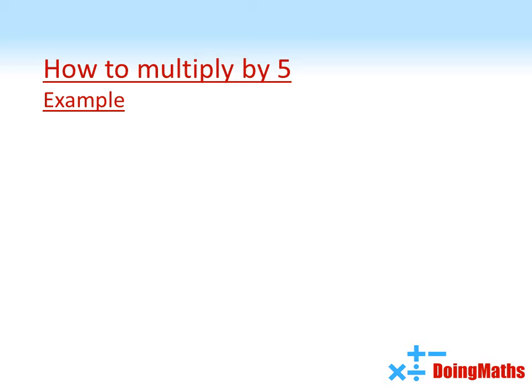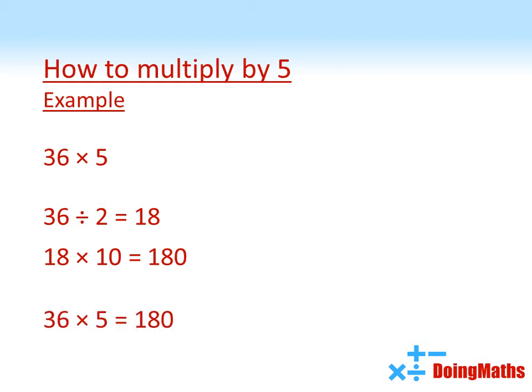So let's try an example. We're going to do 36 times 5. So 36 divided by 2 is 18, times that by 10, we get 180. So 36 times 5 equals 180.